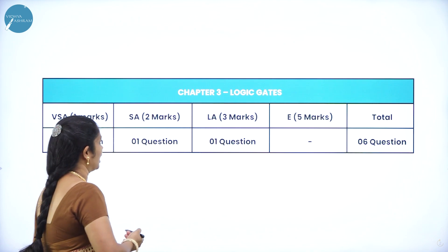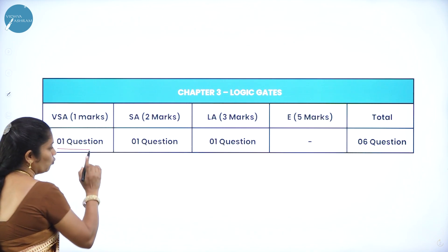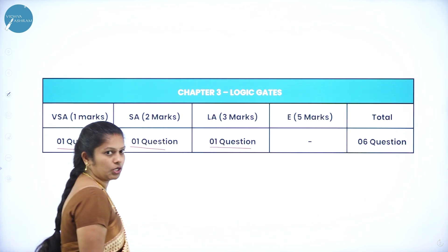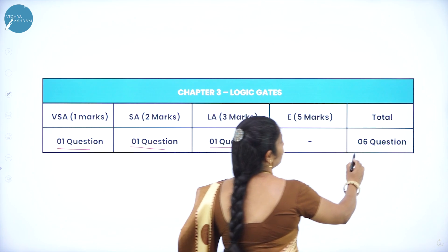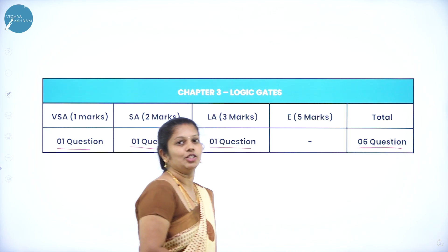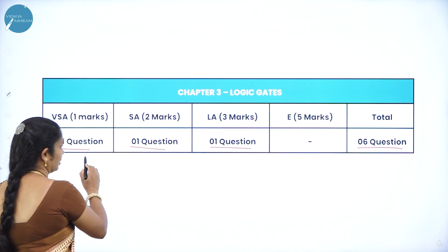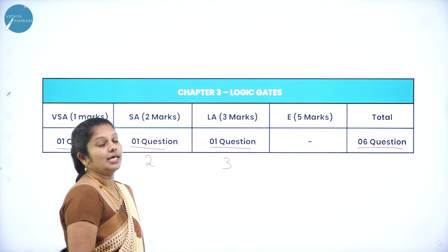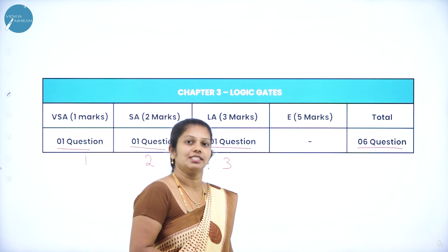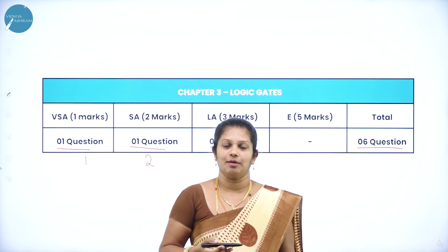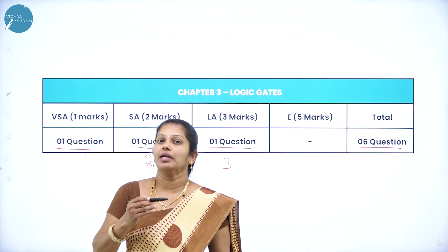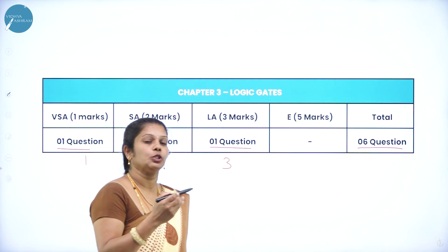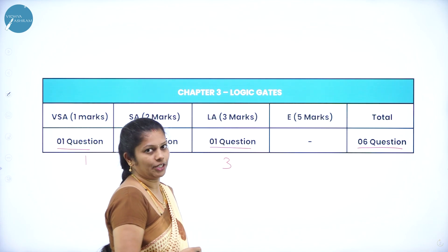The total weightage of this chapter is: in Part A, one question for one mark; in Part B, one question for two marks; and in Part C, one question for three marks. Totally, it will be six marks in the annual exam. It's a very easy chapter and you can learn how to write circuit diagrams as well as truth tables.